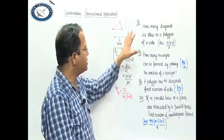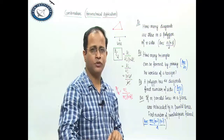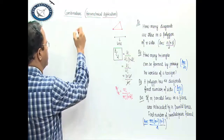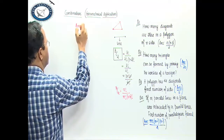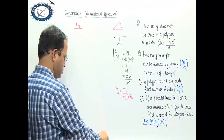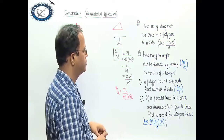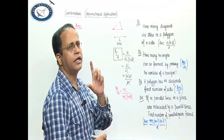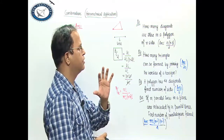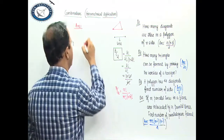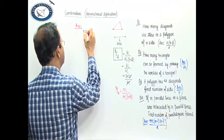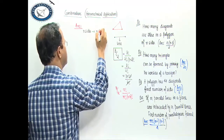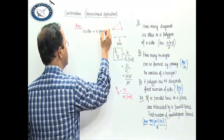Now question number 1: how many triangles are in a polygon of n sides? N sides means what? It implies n points — obviously there are n vertices, n points, n vertices.